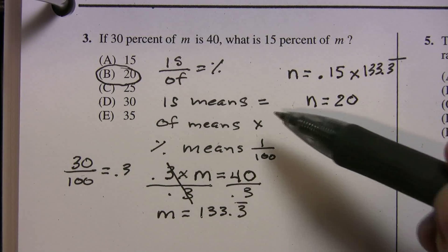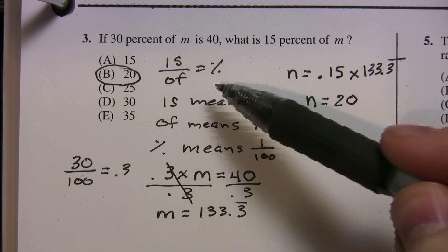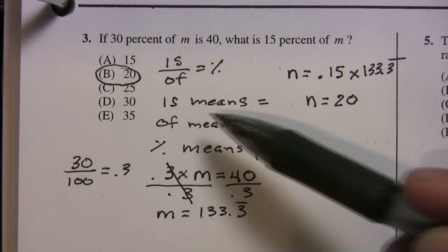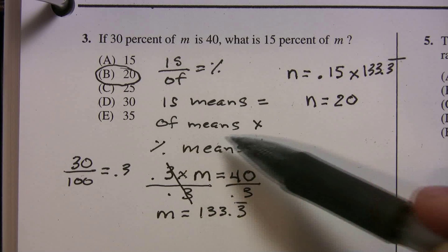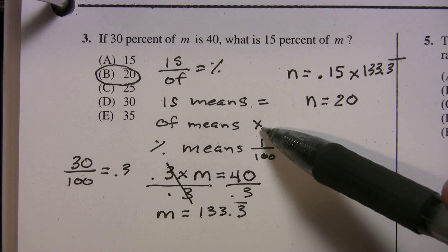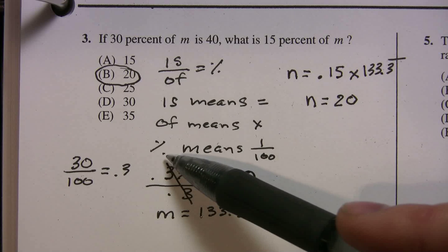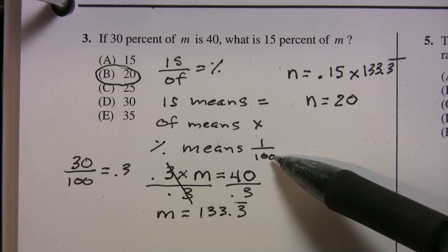So what's really good about this is that you can use is over of equals percent. I just find it easier that anytime you see an is, that means an equal sign. Anytime you see an of, that's a multiplication. And anytime you see percent, you're going to divide by 100.